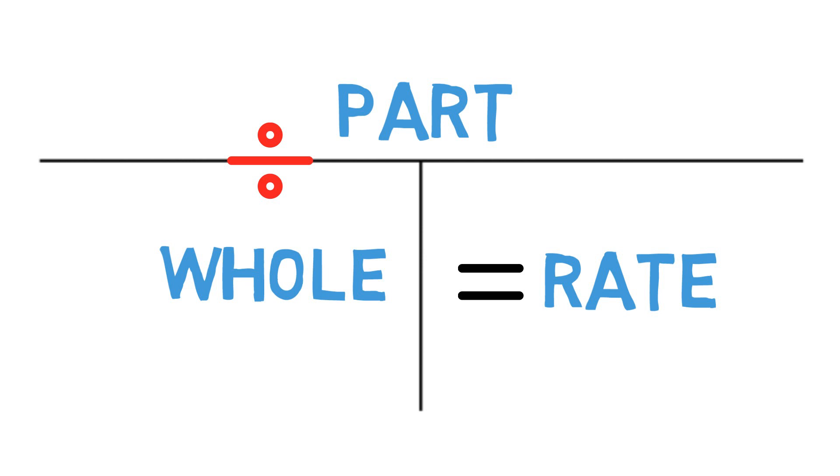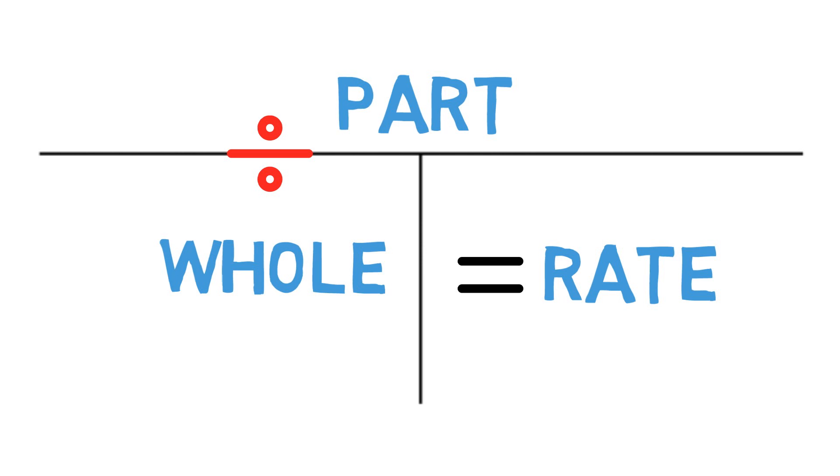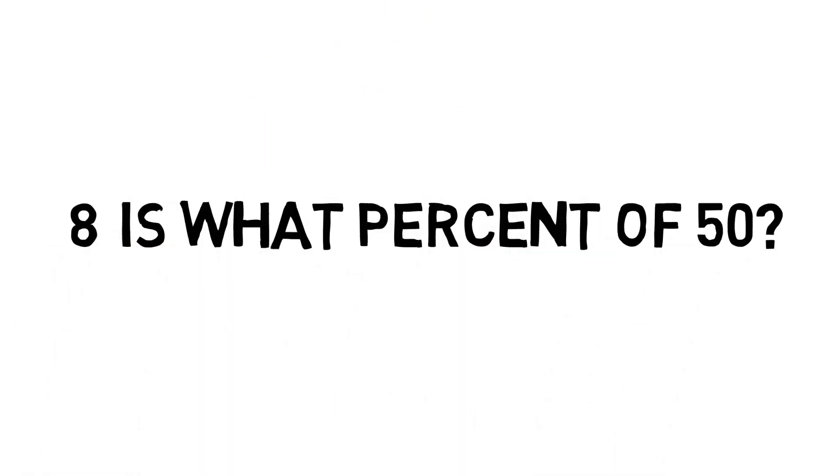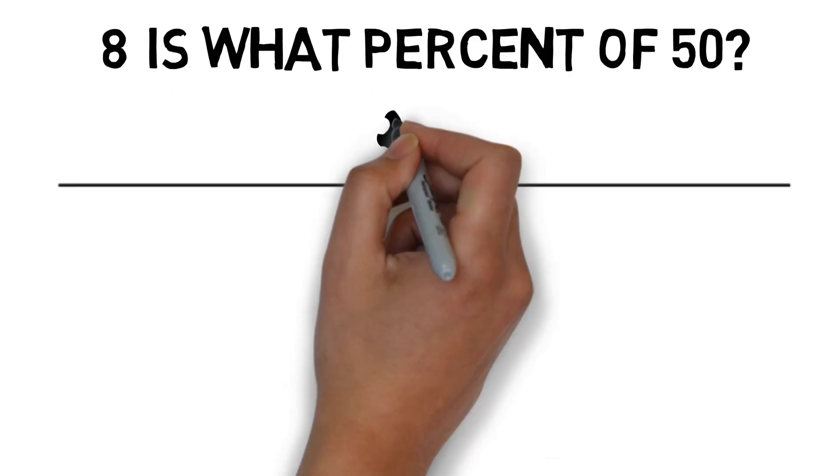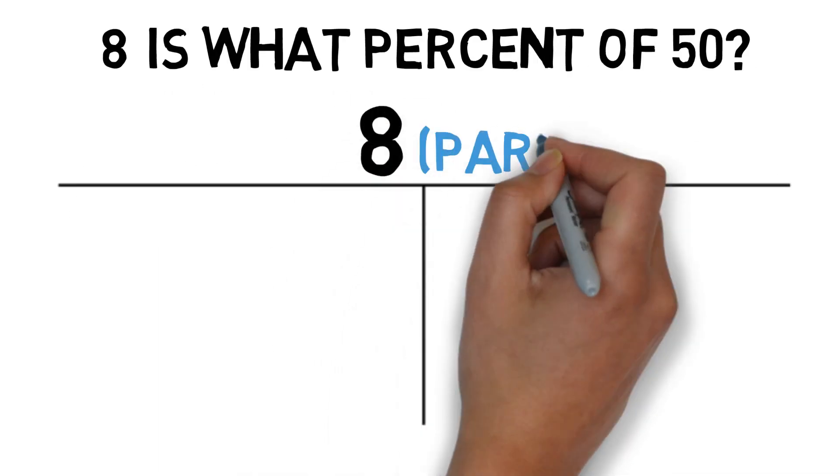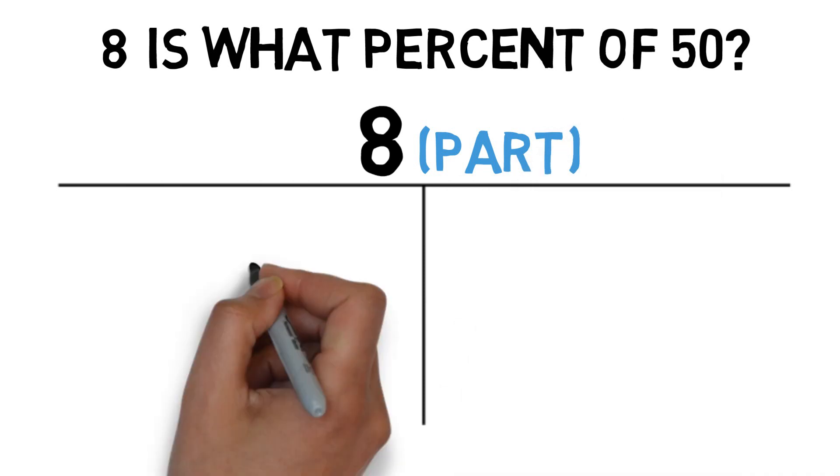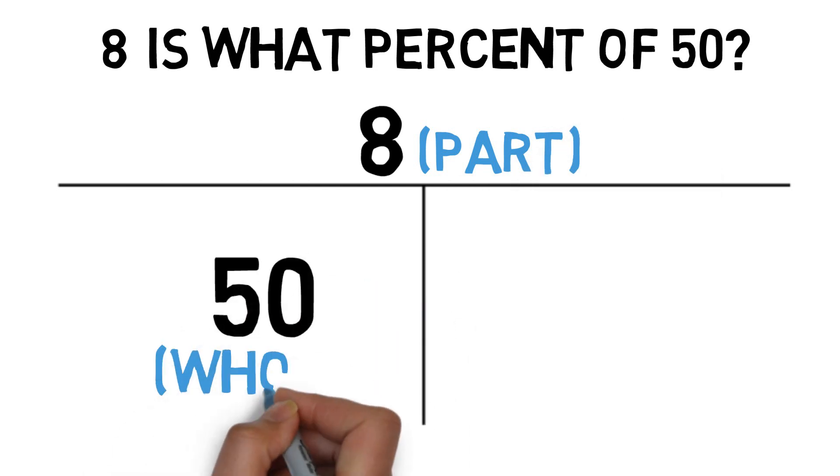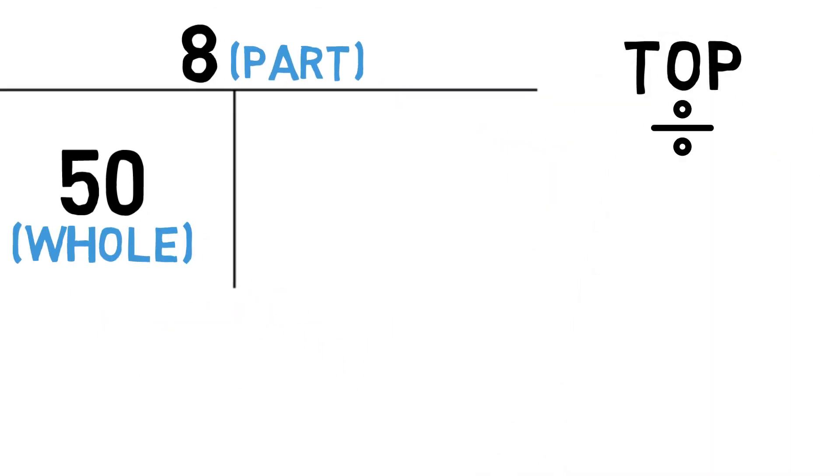Let's put some numbers in to illustrate. Let's say a question says 8 is what percent of 50? In this case, 8 is a smaller number, so it goes up on top for the part. 50 is our larger number, it goes on the bottom left for the whole amount. So our formula says to take the top and divide by the bottom.